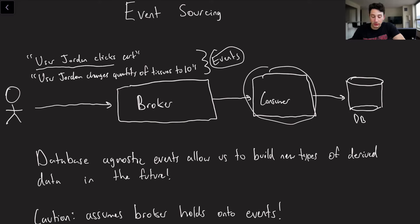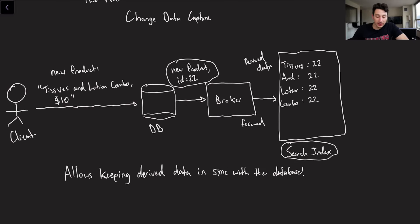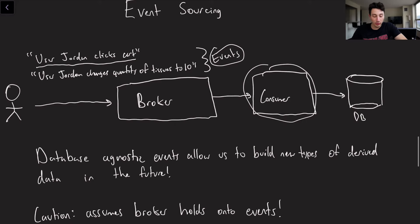The reason they're called events is because they use database agnostic language. As you can see, the type of things that we're doing here are things like me clicking the cart, or me changing the quantity of an item in my cart. The reason for this is that in change data capture, the thing that's actually going into the broker is not database agnostic. This is specific to the database. And so when we have database agnostic events that are going into our broker, basically meaning that they're not actually specific to what database we use or what the state of the database was at the time, it means that let's say 20 years in the future, I want to use a new database.